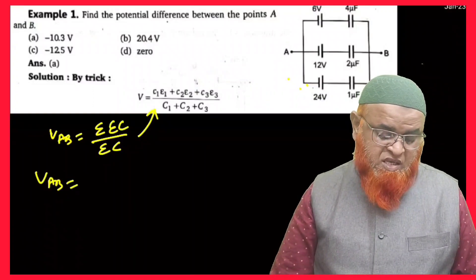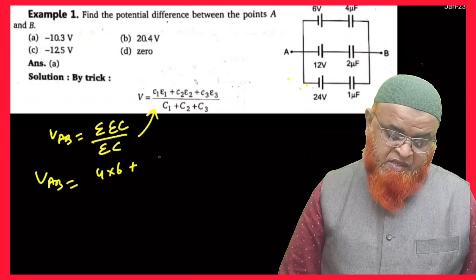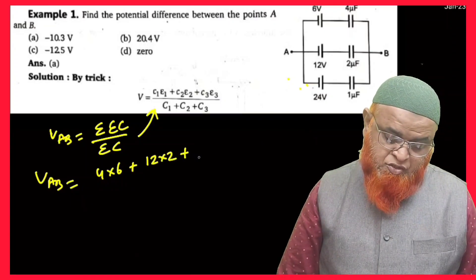C1E1. What is C1E1? C1 is nothing but 4 into 6, plus C2E2 is nothing but 12 into 2, plus...